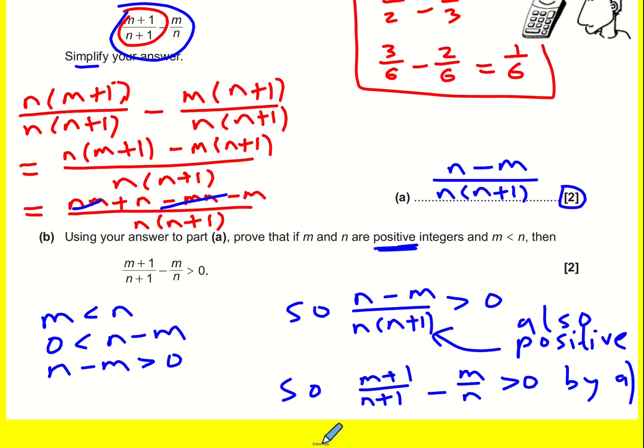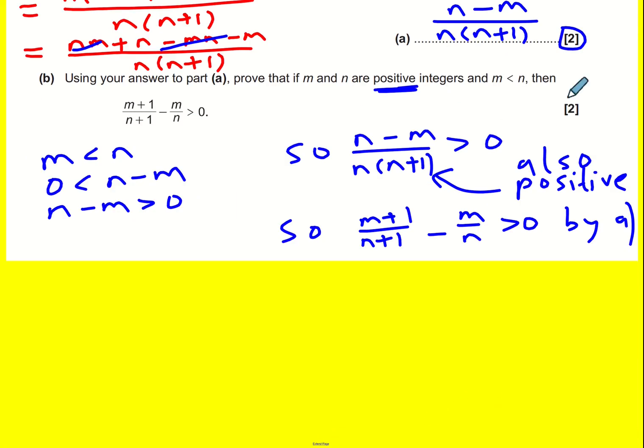What this is saying is I could now pick a value. I mean, I'm done basically, but I just wanted to add, I could maybe let n equal to 4 and let's let m equal to 3, then it would guarantee that 4 over 5 minus 3 over 4 is greater than zero.